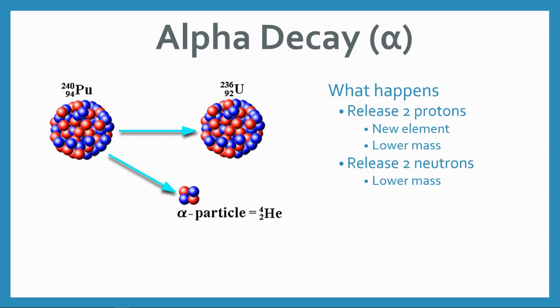So here's what happens. When we release an alpha particle, we're always releasing two protons and two neutrons. When we release protons, we get a new element and it lowers the mass. Both of those things happen. When we release the two neutrons, we lower the mass even more.